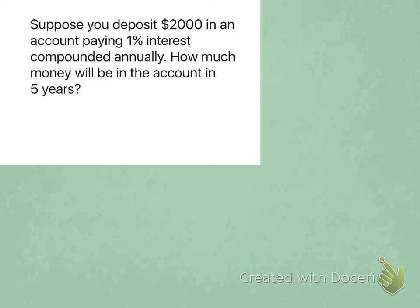This first one says you deposit $2,000 in an account paying 1% interest compounded annually, and we want to know how much money will be in the account in 5 years.